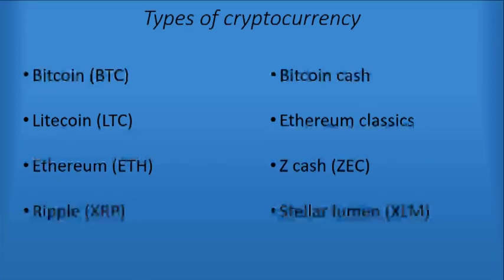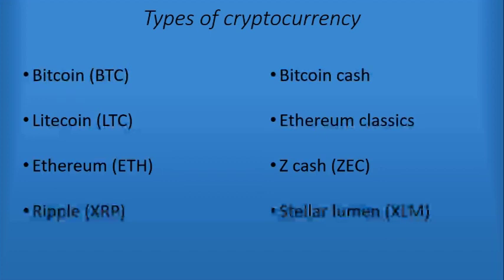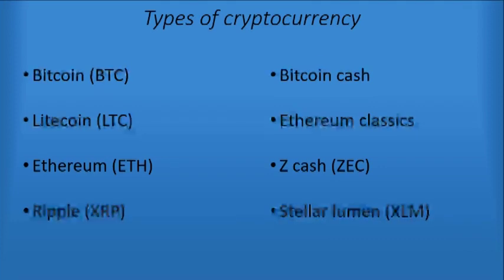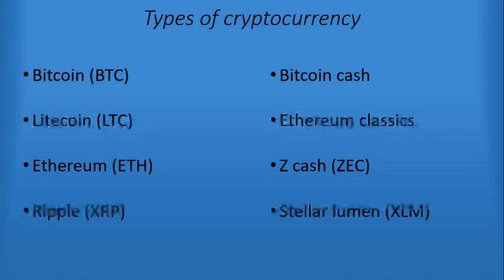The first one is Bitcoin — this is where it all started. It was created by a person called Satoshi Nakamoto, who also created the network on which Bitcoin can be used securely.